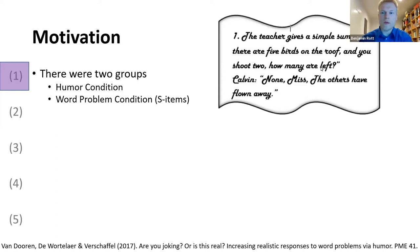The teacher gives a simple sum: If there are five birds on the roof and you shoot two, how many are left? None, miss. The others have flown away.